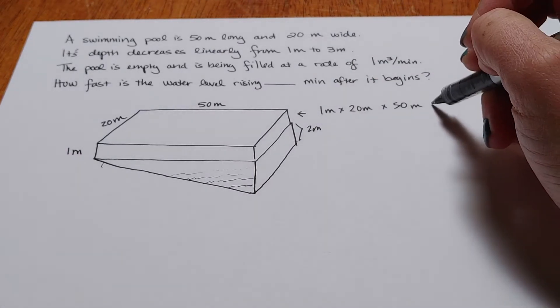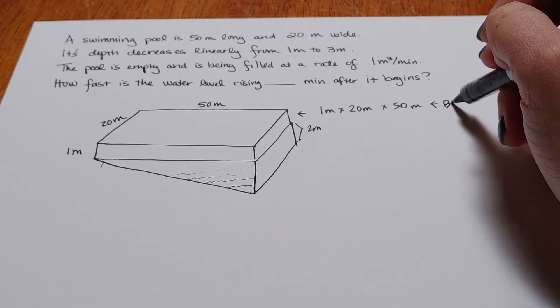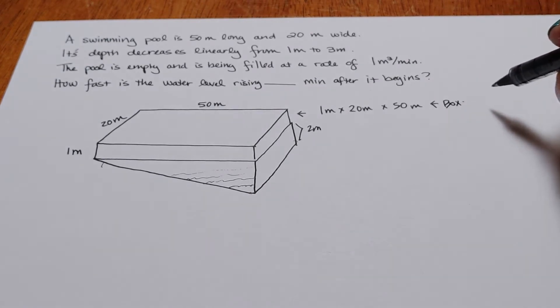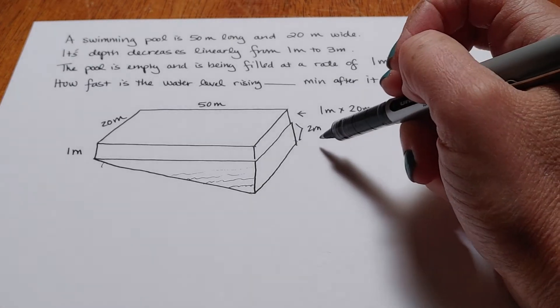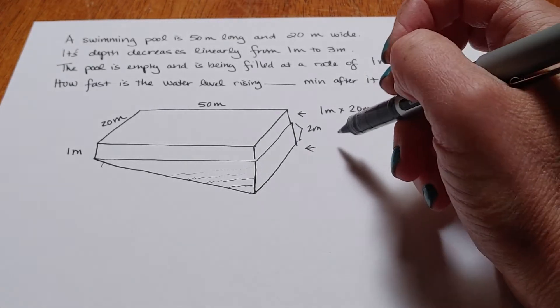So my top shape is a box, which is basically just 1 by 20 by 50, but the bottom is changing.